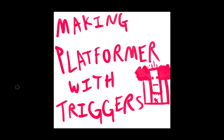Hello, so this is going to be a tutorial which is going to run through building a basic platformer in Stencil. We're going to build a platformer with a kind of basic trigger system built into it, in which a character is going to walk along a section of the level and get squashed by a giant set of crushers.